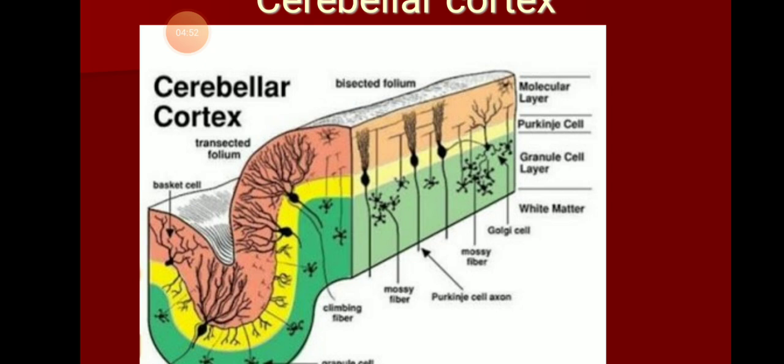Climbing fibers come only from the inferior olivary nucleus — specifically olivocerebellar and pereolivocerebellar fibers. All other afferent fibers reaching the cerebellum are mossy fibers. Climbing fibers end on a single Purkinje cell, whereas mossy fibers synapse on thousands of Purkinje cells.